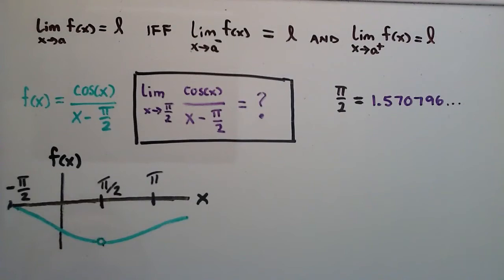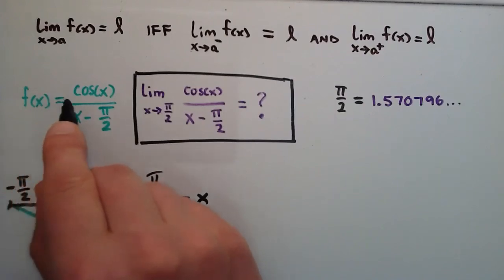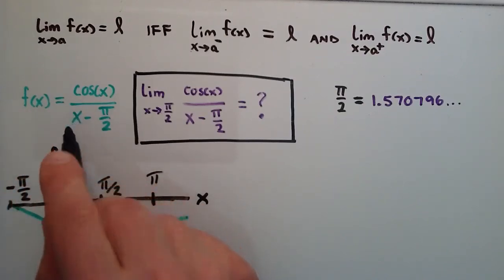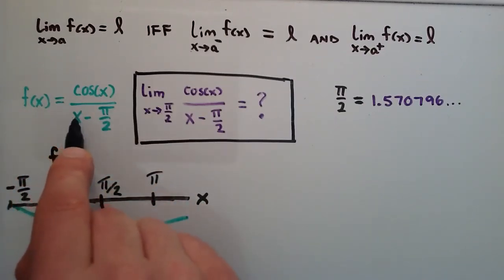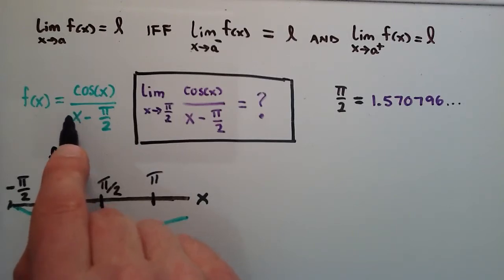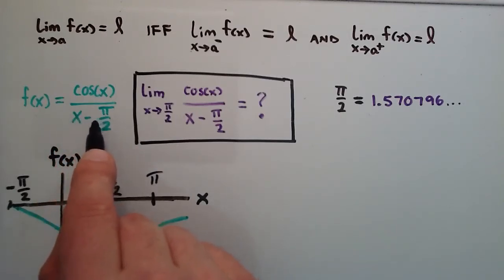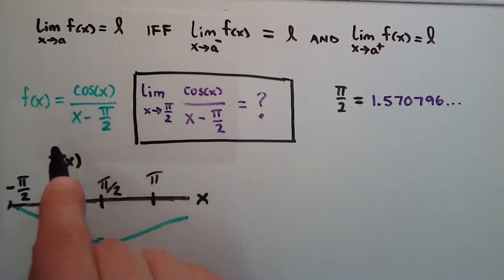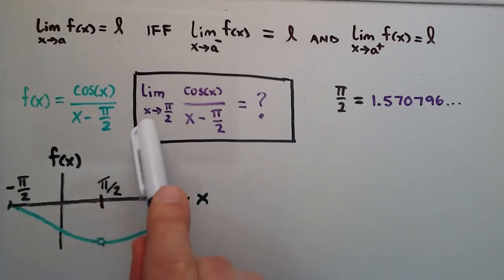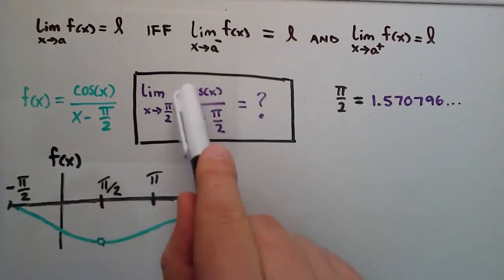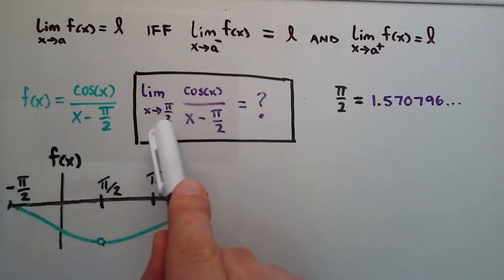If we were to plug in the value pi over 2 into this function and try to evaluate it, we would find that we have an error — it would be undefined. Because if we plug in pi over 2 where x is, we would have pi over 2 minus pi over 2, which gives us 0, and we'd be dividing by 0. So even though we can't actually evaluate f(pi/2), we can still find the limit of f(x) as x approaches pi over 2.